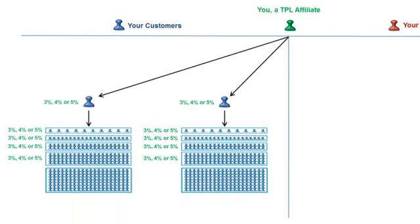Each customer that you add to your top line will do the same. Your objective, of course, will be to add hundreds of people to your top line, so that you'll have hundreds of networks under you as well. Obviously, hundreds of people on your top line translates to hundreds or thousands of customers in your network.